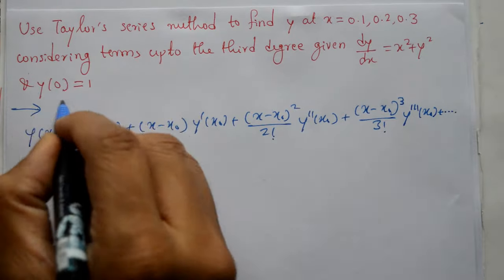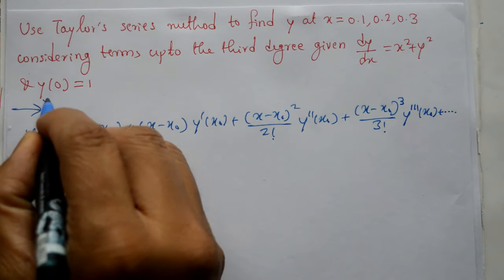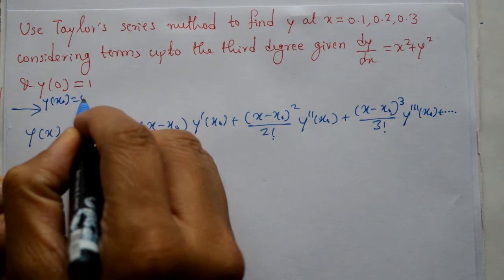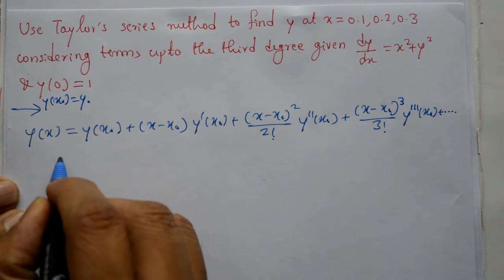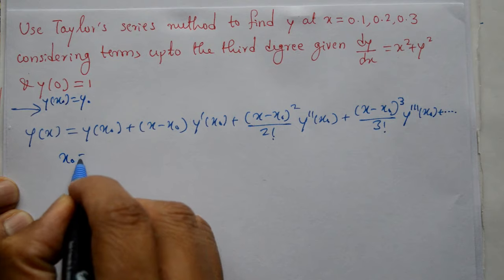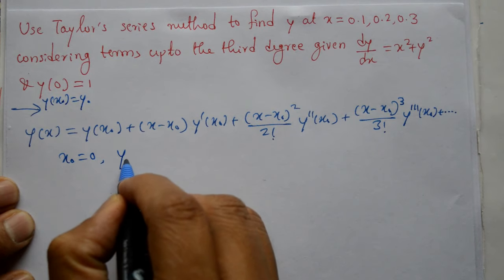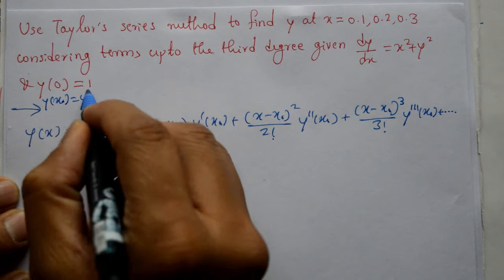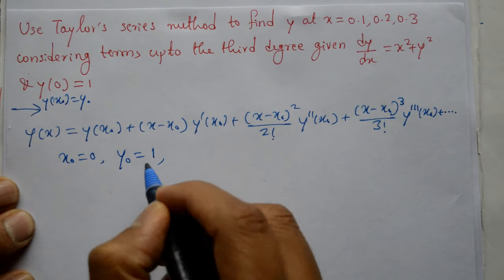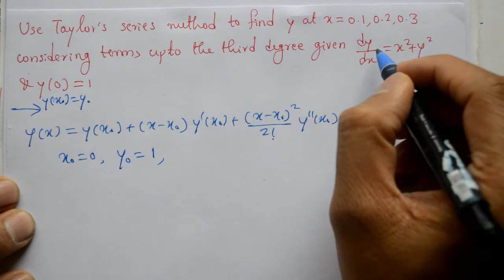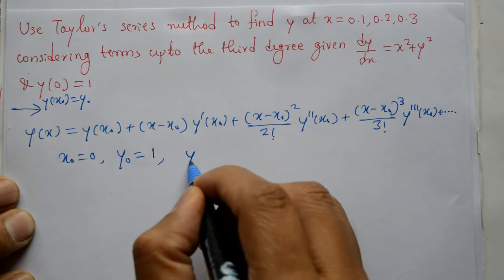Yithar initial condition kya hai: y(x₀) = y₀. x₀ kya hoga yithar — 0 ho gaya. And y₀ kya hoga yithar — 1 ho gaya.